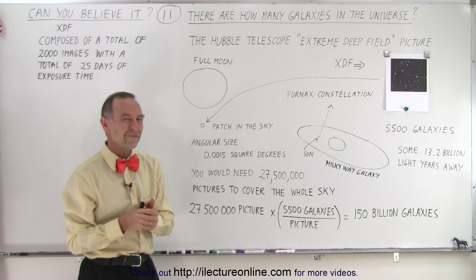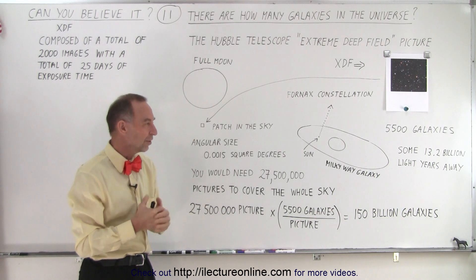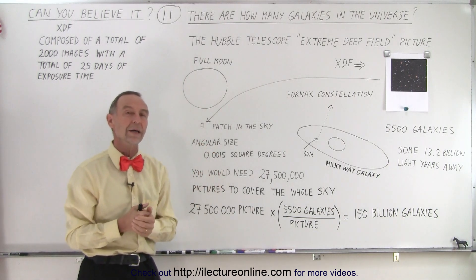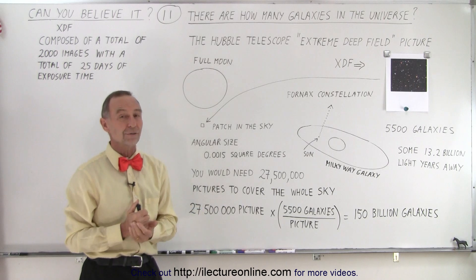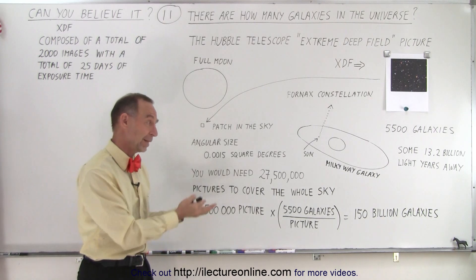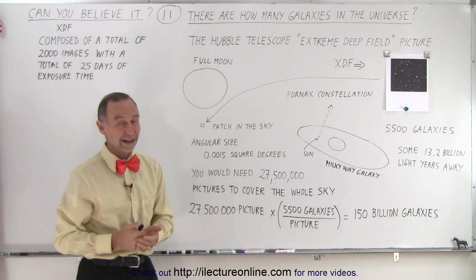So you can imagine 150 billion galaxies, each one of them huge in its own way throughout the entire universe. So if you ever wondered, here's the answer. And this is how they figured it out.